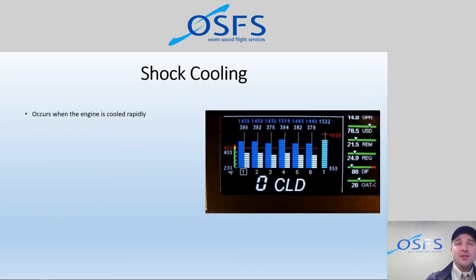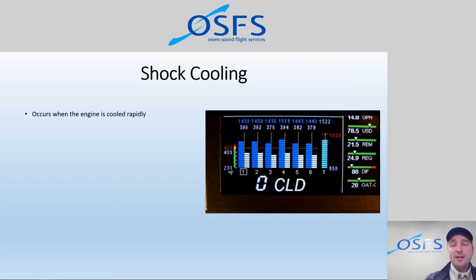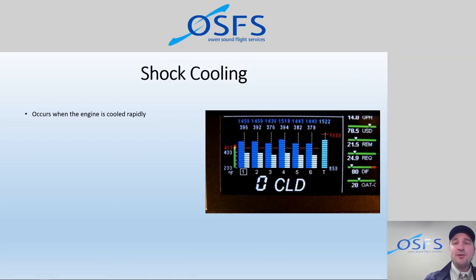We're watching for shock cooling when the cylinders start to cool rapidly. We can see this in the training environment when doing airwork exercises like power off stalls — we suddenly reduce power all the way to idle from cruise power, and that's a big reduction in heat, especially in the wintertime. If we're at 3,000 or 4,000 feet and it's minus 20 and we're going from cruise power to idle power, it would be a significant impact on shock cooling. So it will help us to be more gradual in our power reductions.